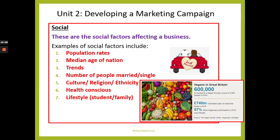The median age of a nation refers to the average age of a person in that nation. For example, if you research and find the average age in the UK is around 30, that means half the nation is above 30 and the other half is below 30. How old are most people in a nation? That's what we mean by median age.